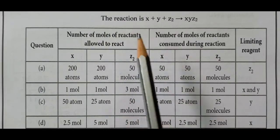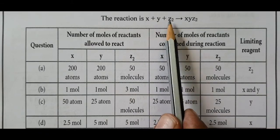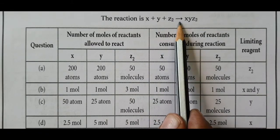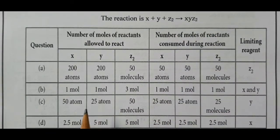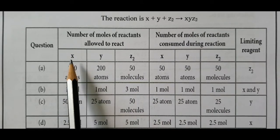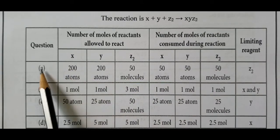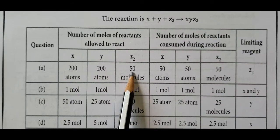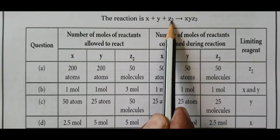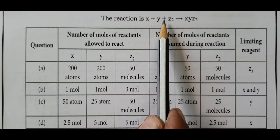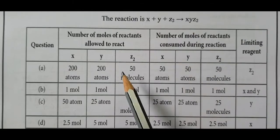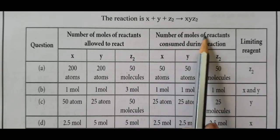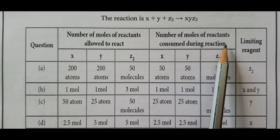The reaction is X + Y + Z2 → XYZ2 with a 1:1:1 molar ratio. For mixture (a) with 200 atoms of X, 200 atoms of Y, 50 molecules of Z2, the lowest number is 50 molecules. So 50 of each reactant is consumed.